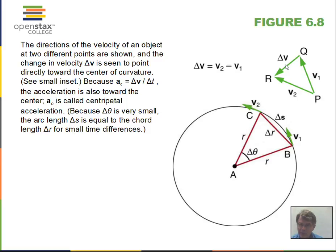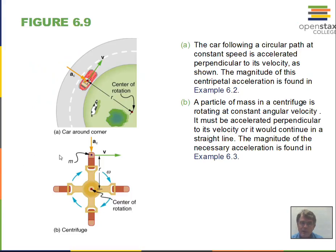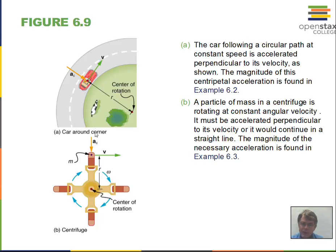The direction of delta v is the direction of the acceleration. The acceleration is towards the center of the circle. A car going around a curve needs acceleration towards the center of the circle, and in a centrifuge, the test tube circulating with liquid inside also has an acceleration towards the center of the circle.